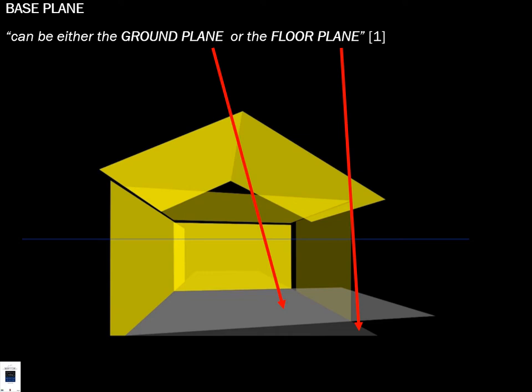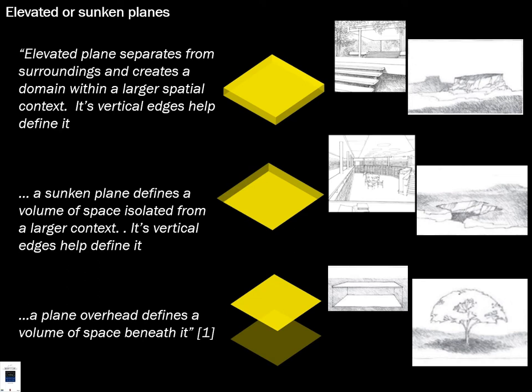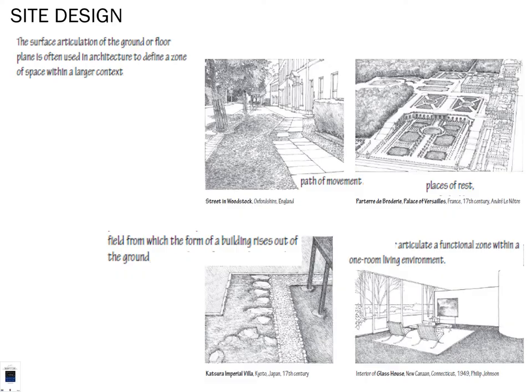Starting with the basic elements of form, we have a ground plane and a floor plane — not always the same thing. The elevation and terrain of the site versus the floor plane of the structure relates to how elevated or sunken planes work. An elevated plane separates from surroundings and creates a domain within a larger spatial context, while a sunken plane defines a volume of space isolated from a larger context. The overhead plane defines a volume of space beneath, like a tree canopy. Surface articulation of the ground or floor plane is often used in architecture to define a zone within a larger context.